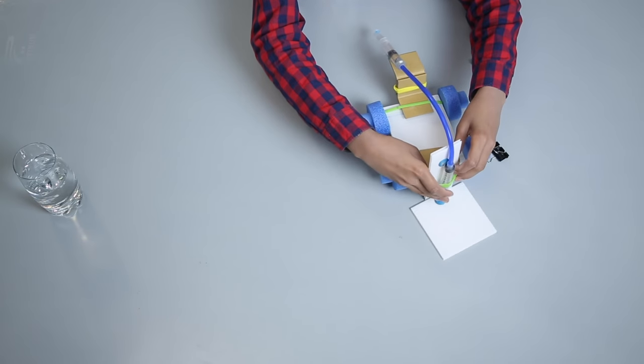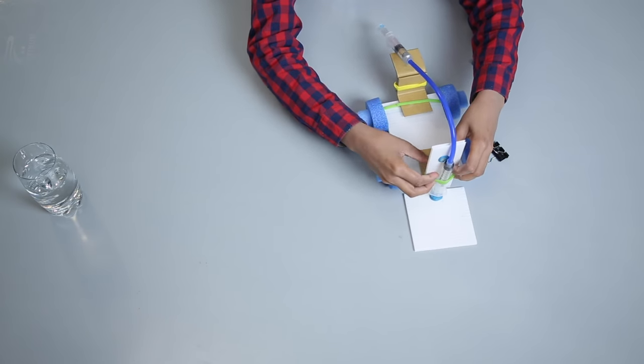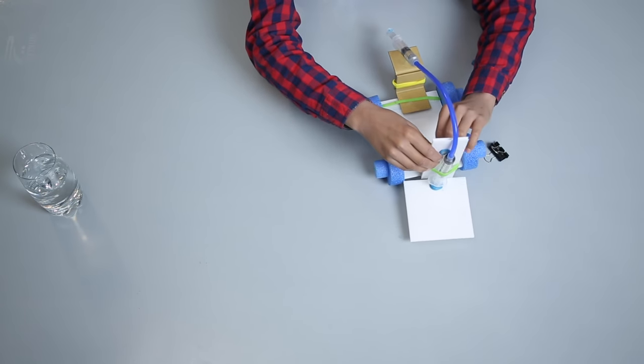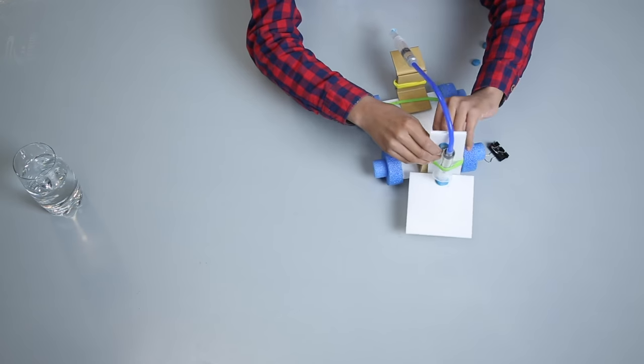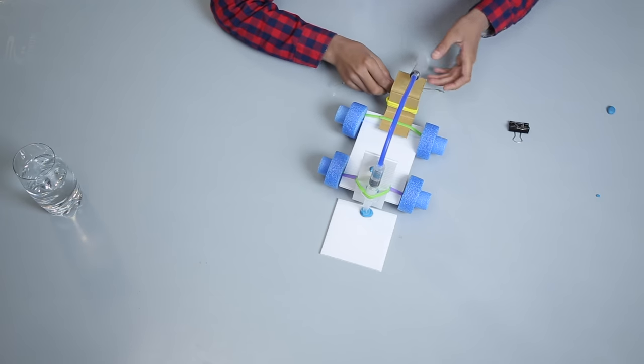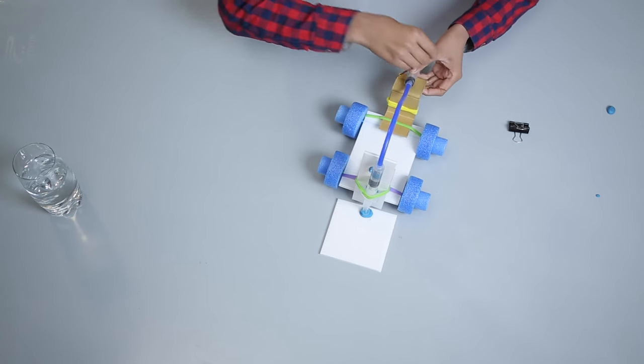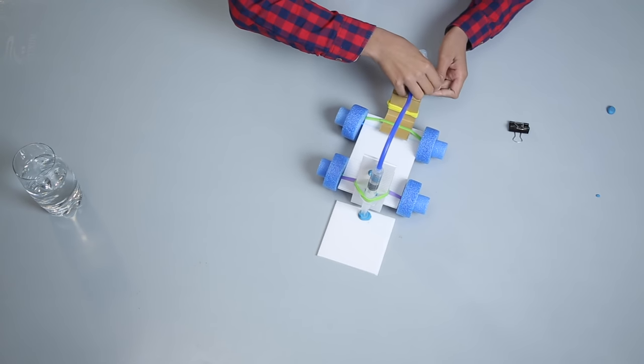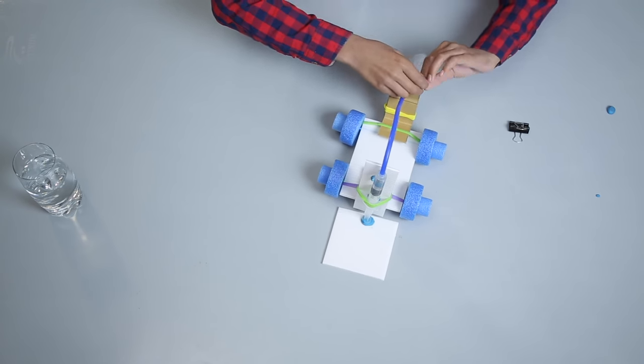Attach one of the syringes to the Corflute and bind this syringe vertically to the Corflute attached on the front side with the help of rubber bands. Now, attach the second syringe to the back side of the forklift. Tie the syringe to the cardboard angles using tie wire.